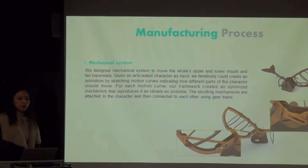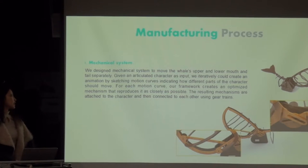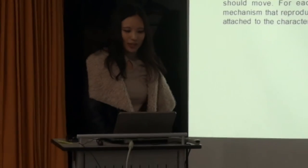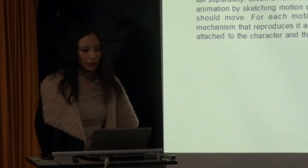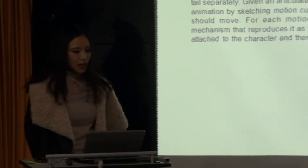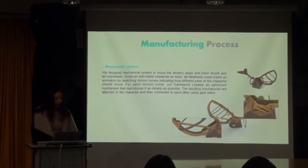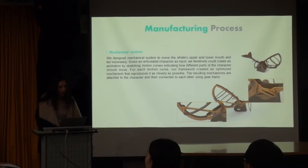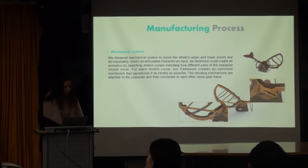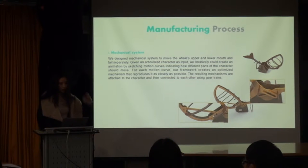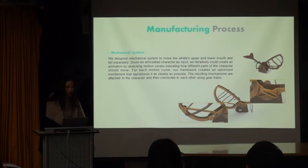I'm going to talk about the manufacturing process. We really focused on this mechanical system, so it took quite a long time to make this. We designed the mechanical system to move the whale's body, mouth, and tail separately. Given an articulated character, it could iteratively create an animation by sketching motion cards indicating how different parts of the character should move. For each motion card, it creates an optimized mechanism produced as closely as possible.